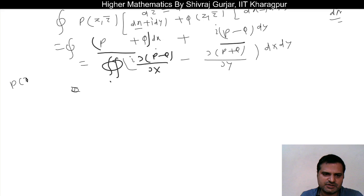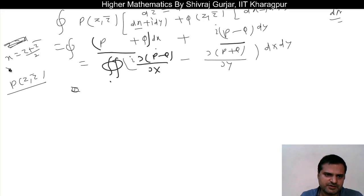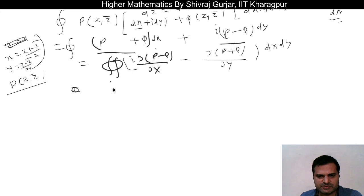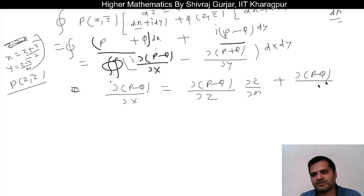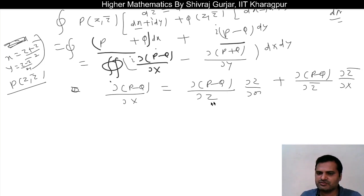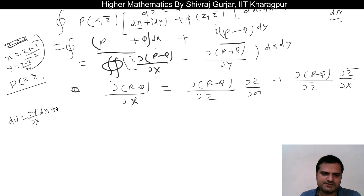Now we can say that x is (z plus z-bar) by 2, and y is (z minus z-bar) by 2 iota. So del(p minus q) by del x can be written as del(p minus q) del z times del z del x, plus del(p minus q) del z-bar times del z-bar del x. This is the chain rule applied treating p minus q as a function of z and z-bar.